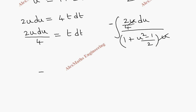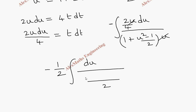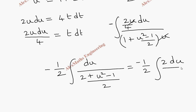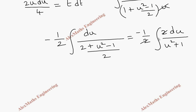Finally in the numerator we take 2 by 4 outside, which is 1 by 2. The integral becomes du divided by 2 plus u² minus 1. Carrying the 2 to the numerator gives minus 1 by 2 integral of 2 du, and simplifying we get u² plus 1. Cancelling the 2, we integrate to get tan inverse u plus c.